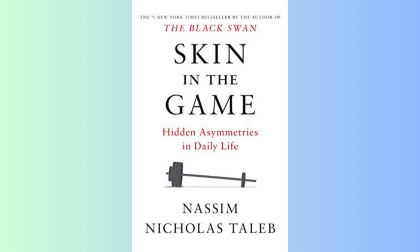The author argues the silver rule — do not treat others as you would not like to be treated — is more robust than the golden rule of treating others as you want to be treated. The silver rule tells you not to impose what you think is good on others and focuses on avoiding harm. It works at multiple scales, from individuals to societies to countries. The author criticizes universalism, which takes ideas that work on paper but not in practice. People are local and practical, sensitive to scale. Micro works better than macro.